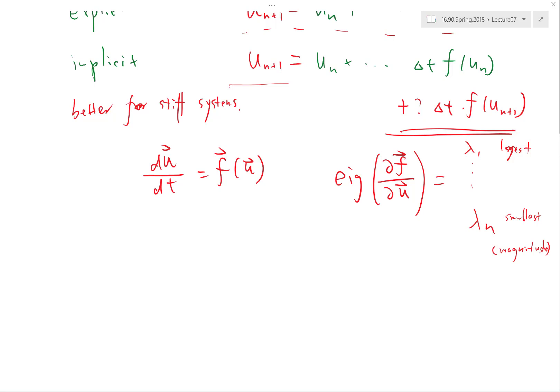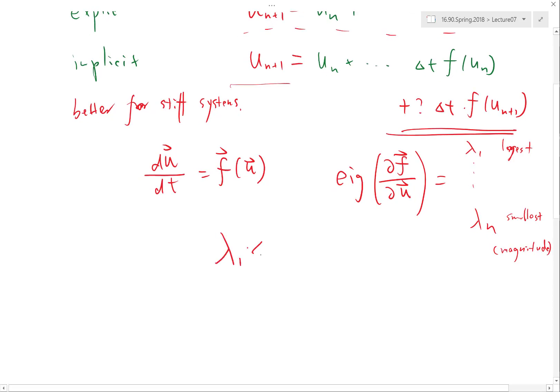By saying that you want a time step that is much larger than the dynamics of the fastest time scale, I mean I want a λ_1 times Δt that is much much larger than 1.